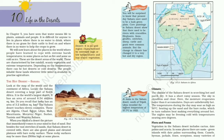The Sahara Desert touches 11 countries: Algeria, Chad, Egypt, Libya, Mali, Mauritania, Morocco, Niger, Sudan, Tunisia, and Western Sahara.